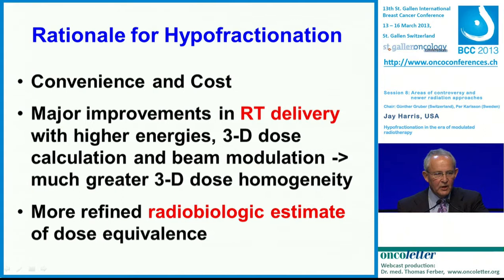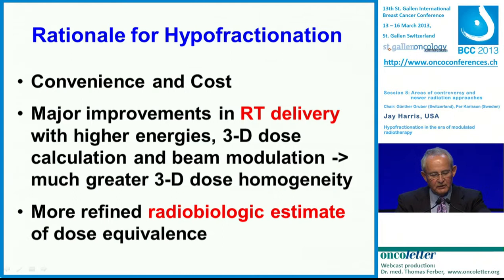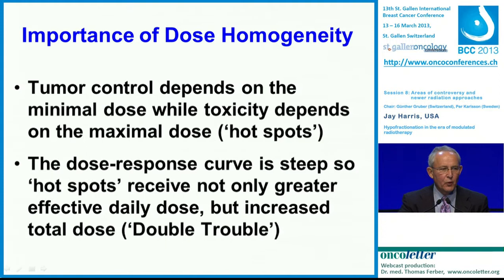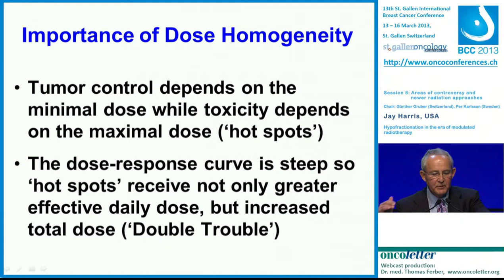This is due to two major factors. One is major improvements in radiation delivery with higher beam energies, three-dimensional dose calculation, and beam modulation, so that we're now able to achieve a much greater three-dimensional dose homogeneity. The other important development is that we now have more refined radiobiological estimates of dose equivalence. It's very important, particularly in hypofractionated treatment, to have high levels of dose homogeneity. We know that tumor control typically depends on the minimal dose, while toxicity depends on areas of maximal doses, which we call hot spots.